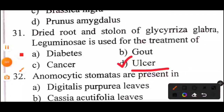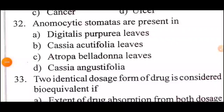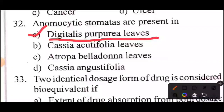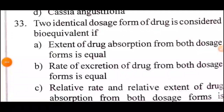Question 32 of 60: Anomocytic stomata are present in? Answer is Option: Digitalis purpurea leaves.